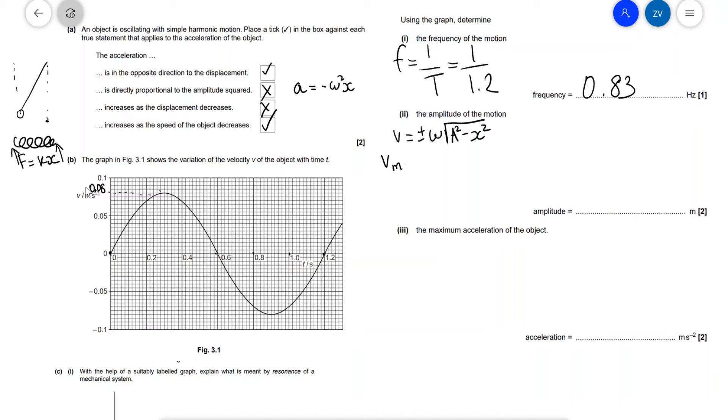And we know that v max happens when x is equal to 0, so this is going to equal to plus or minus omega the square root of a squared, which is equal to plus or minus omega a. So v max will be equal to plus or minus omega a, which is also equal to plus or minus 2 pi f a.